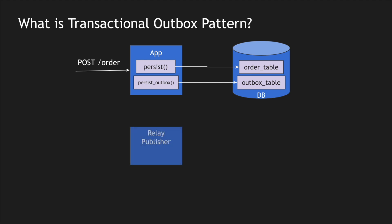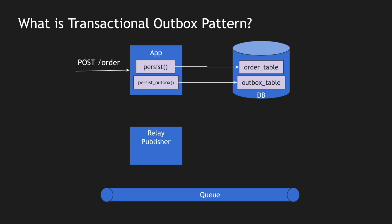The job of the order service is done at this point. In order to publish the message from the outbox, I create a relay publisher which reads the message from the outbox table and publishes it into the queue. We are adding one more microservice, but we are fixing the problem of having an unreliable queue. Whenever an order is created, it's persisted only to the database, and the relay publisher handles the rest.